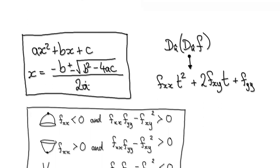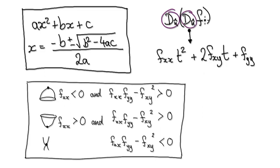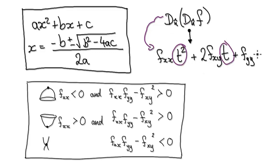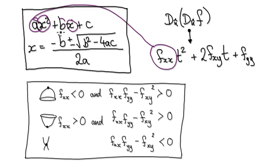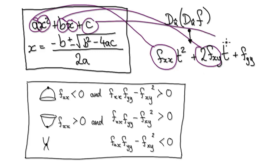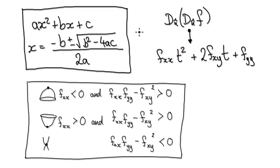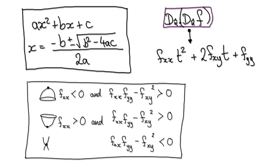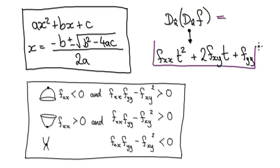The trick to understanding this is to look at the directional derivative of a directional derivative. In the next video, I will take it step by step and show you the mathematics. But when you try and find the directional derivative of a directional derivative, for some reason a quadratic crops up. You've got a quadratic where this here is just a constant — this is your A, this is your B, and this is your constant. We introduce a new variable to represent something else, but the key point is that a quadratic crops up.